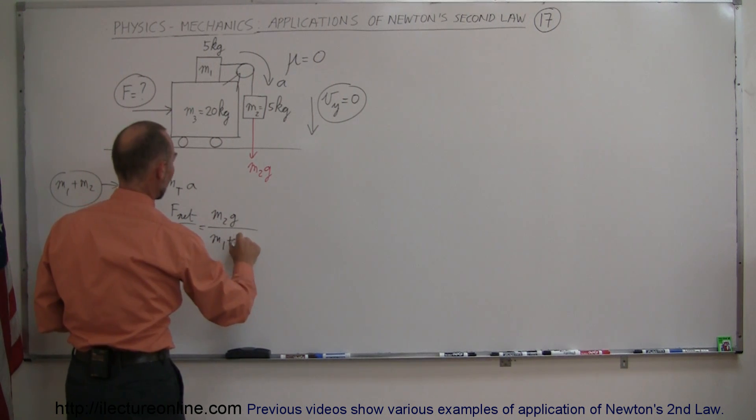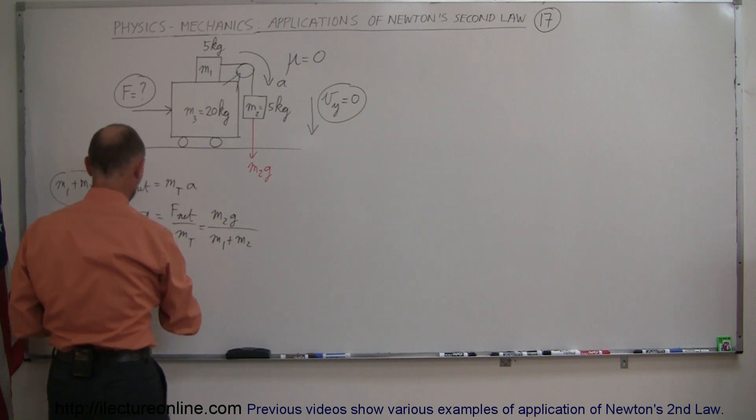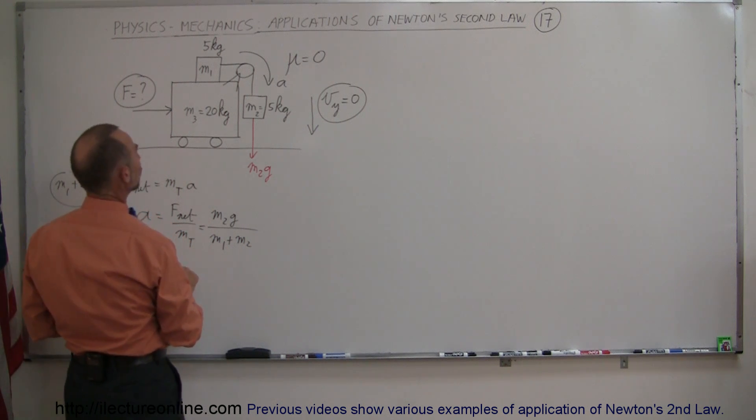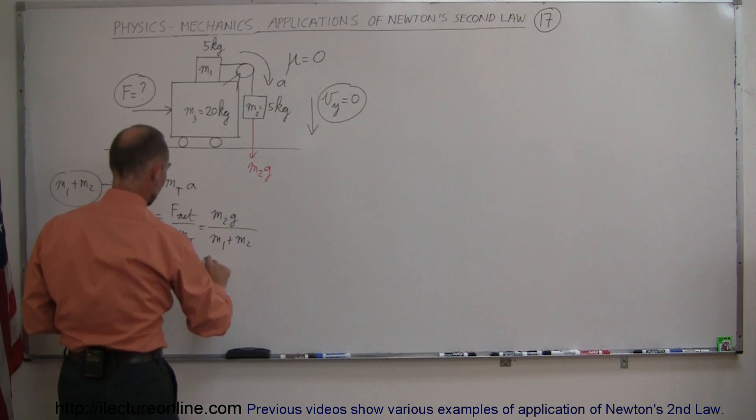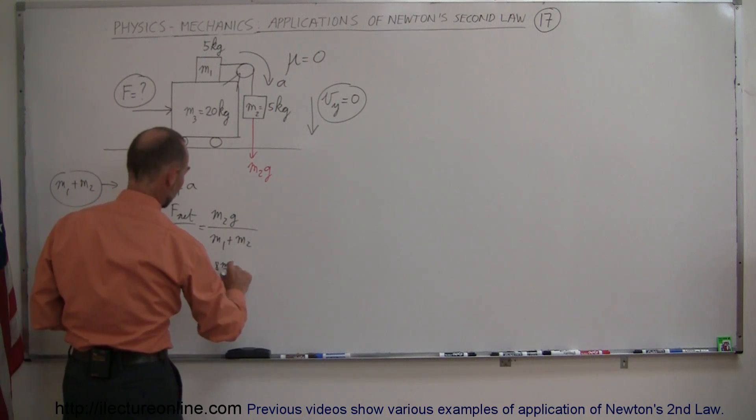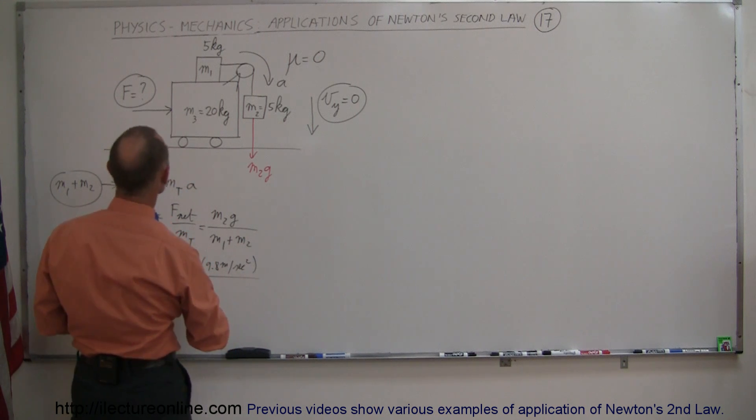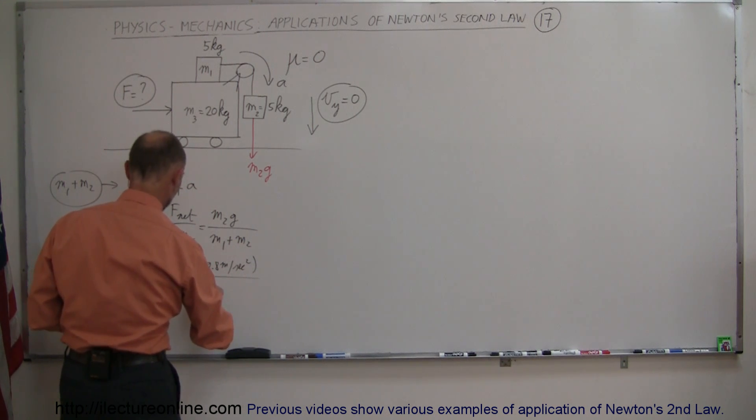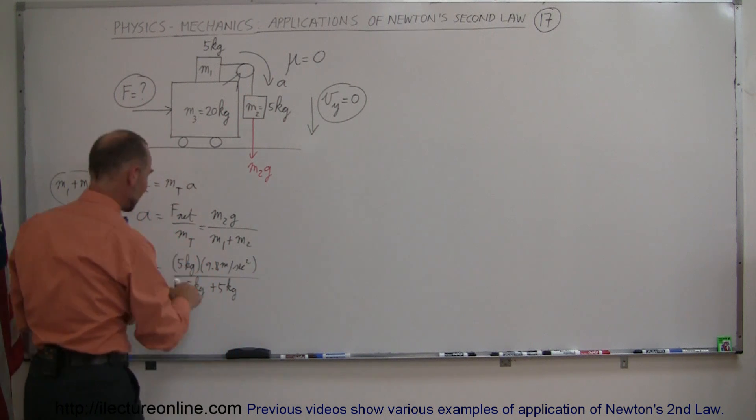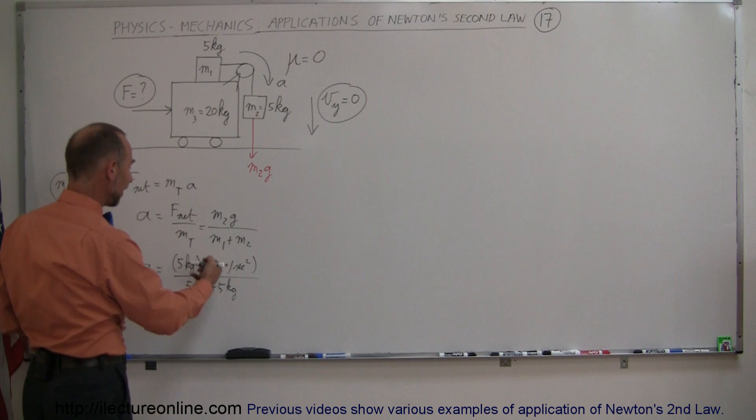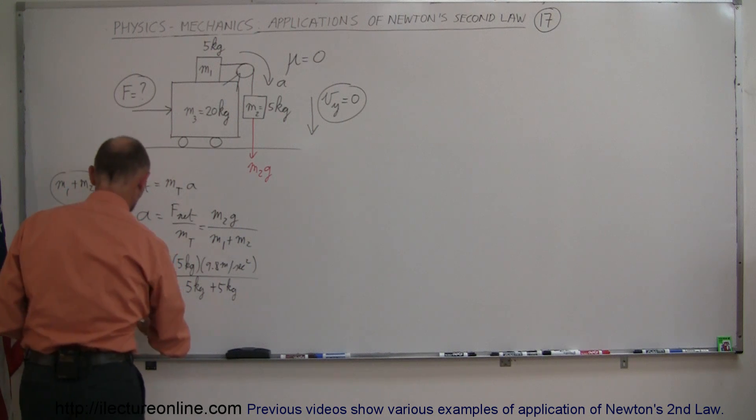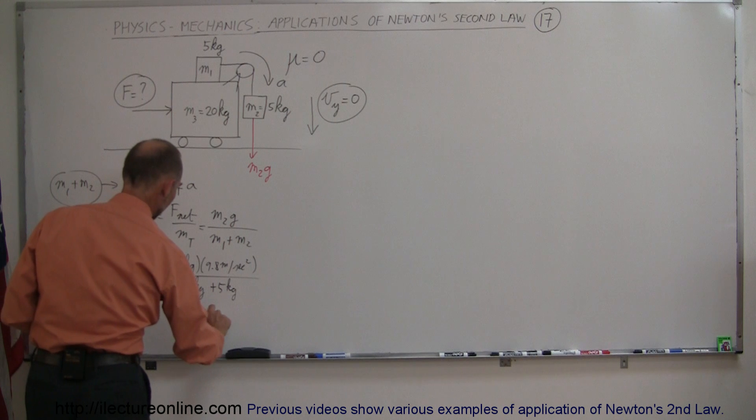And so we have acceleration is equal to M2 which is 5 kilograms, G is 9.8 meters per second squared, divided by M1 which is also 5 kilograms, so 5 kilograms plus 5 kilograms. So you can see that that's 5 divided by 10 which is one-half times 9.8 meters per second squared, or the acceleration is equal to 4.9 meters per second squared.